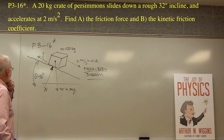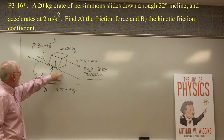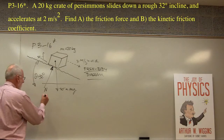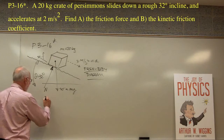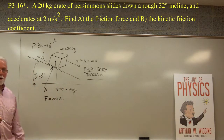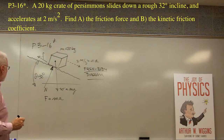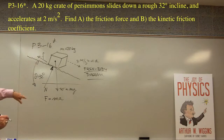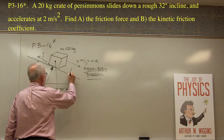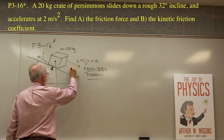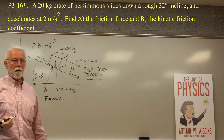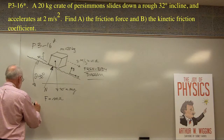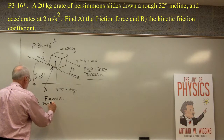Now we have the free body diagram — we can erase the plane and the earth, leaving all the forces we need. We can write Newton's second law: F equals ma. Since this is directional, we set up an axis system where x goes down the plane and y goes perpendicular to the plane. We could have chosen horizontal and vertical, but this is more convenient.